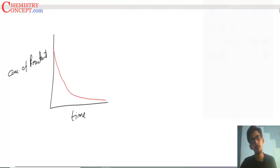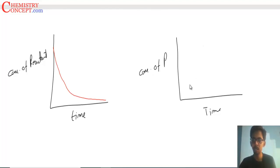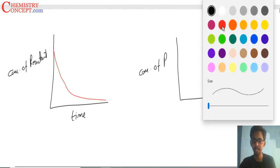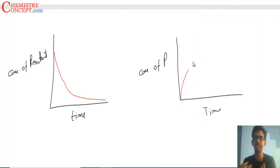If I make a graph of concentration of product versus time, the graph will look like this. Because we all know that as the reaction proceeds, product concentration increases, reactant decreases.